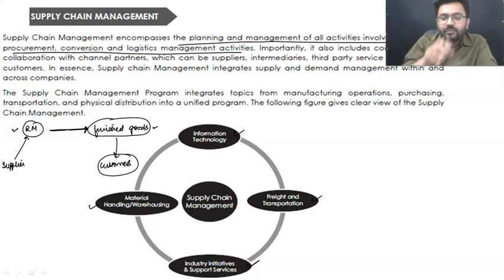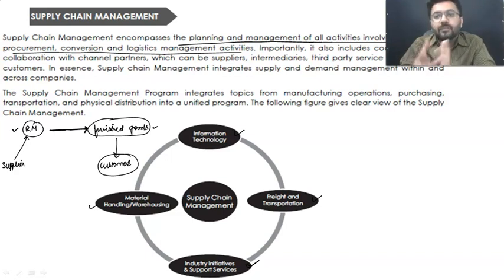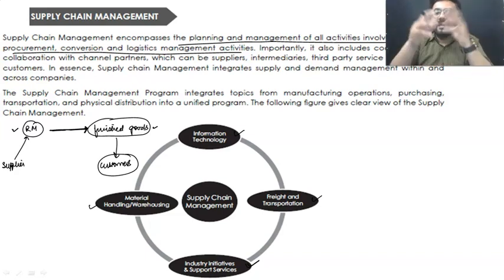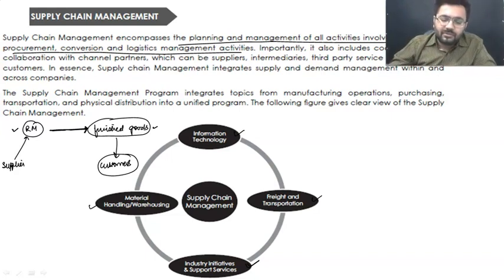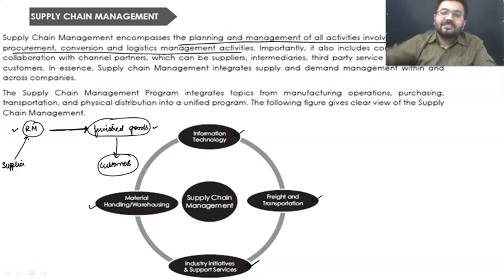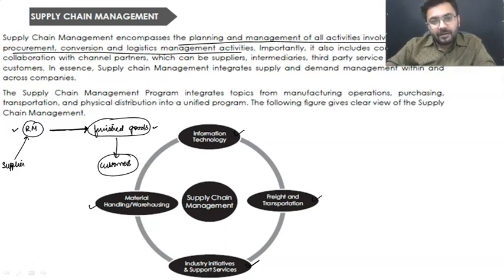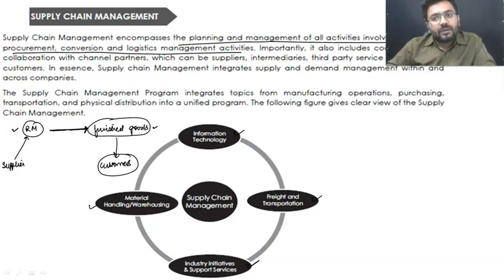Supply chain management is all about paying attention and planning all the activities with proper coordination and collaboration, so that you can have an efficient demand and supply system. For example, if I have given an advance of 20 lakh rupees to book a BMW and they told me the car will be delivered in two months — that is the waiting time period — within those two months, they should deliver the car.